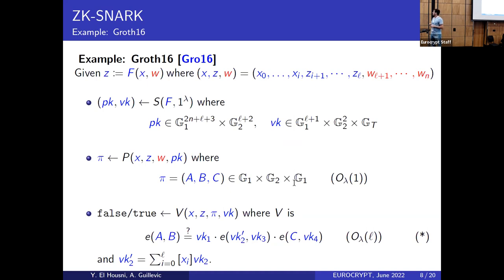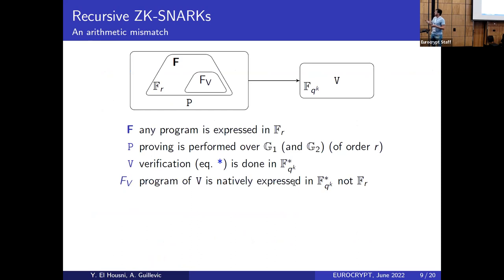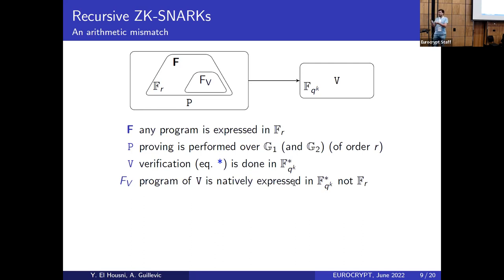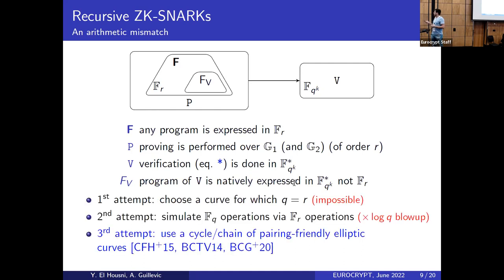Other applications for recursive proofs include space and time complexity improvements. In pairing-based SNARKs, computations performed by the NP program run in F_r (the subgroup order field). The prover operates in G1 and G2. But the verification — a pairing computation — takes place in a different field, F_{p^k}. So if you want to create a proof that verifies another proof, there is an arithmetic mismatch.